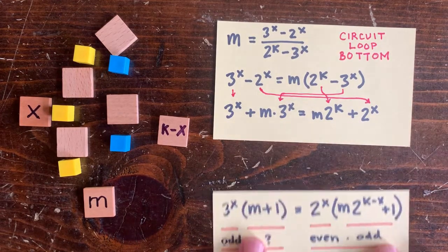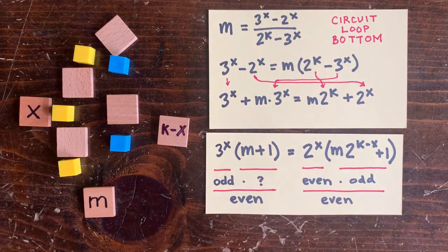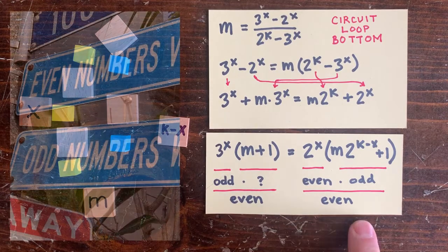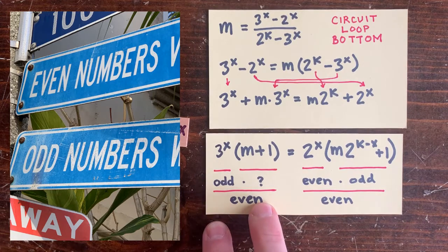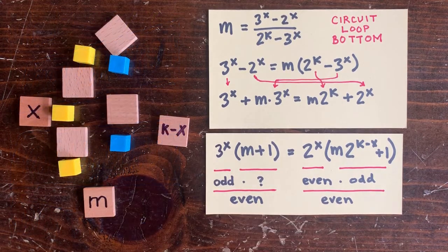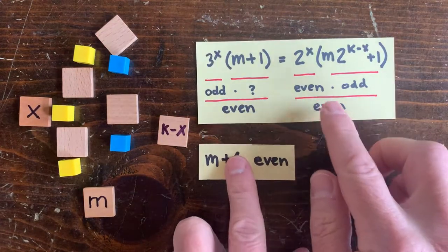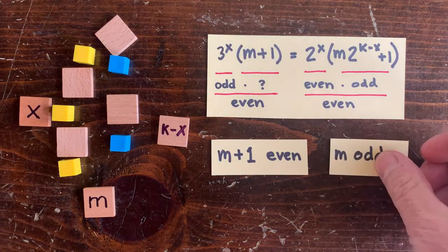Then let's take out the 2 to the x from the right-hand side. Now let's look. On the right-hand side, we've got an even number, 2 to the x, times an odd number. So the whole right-hand side is even. And on the left side, we've got an odd number, 3 to the x, times something, m plus 1. So for the left side to also be even, m plus 1 has to be even, because otherwise we'd have an odd times an odd, which would be odd.